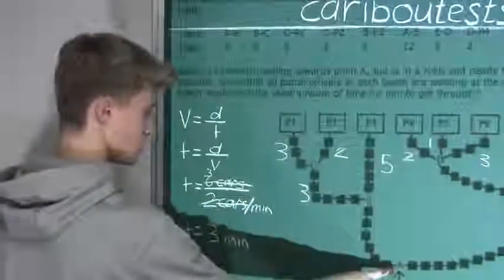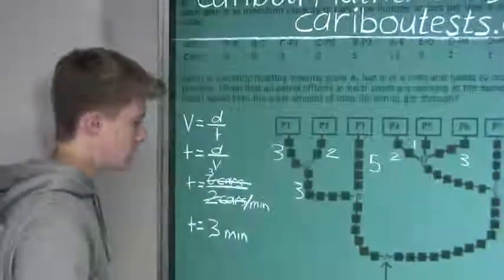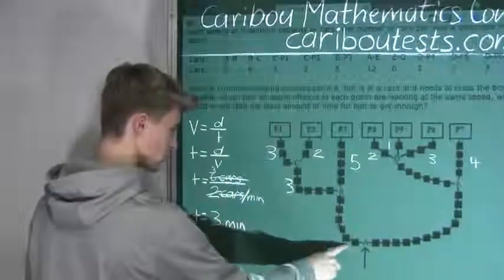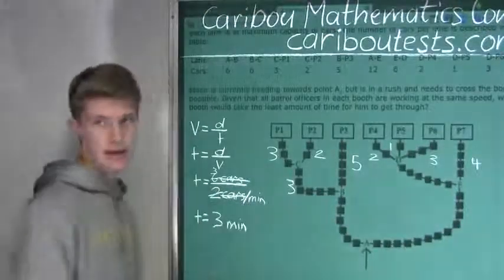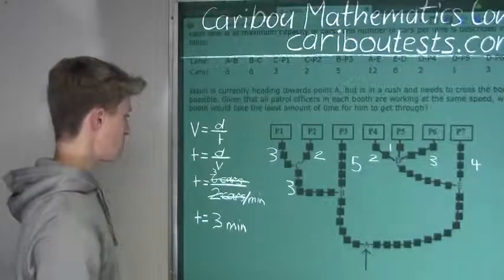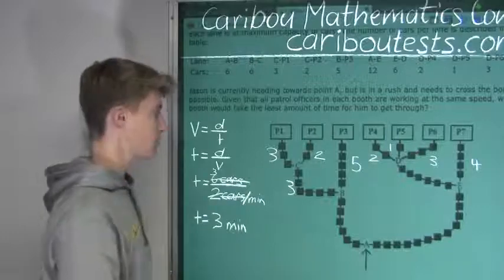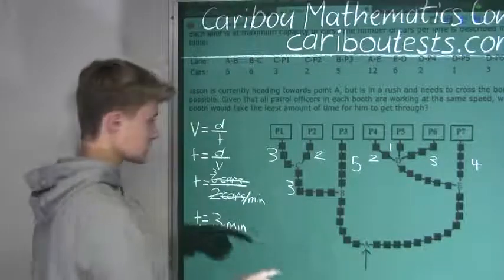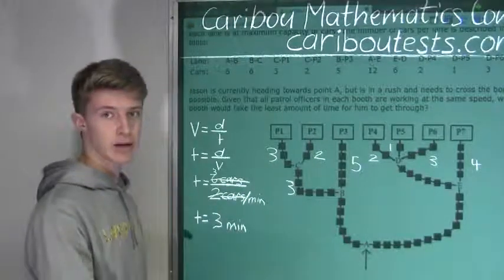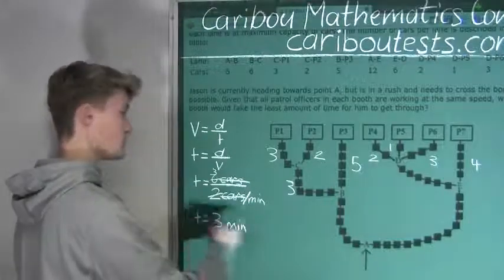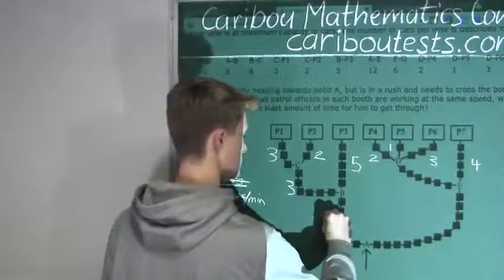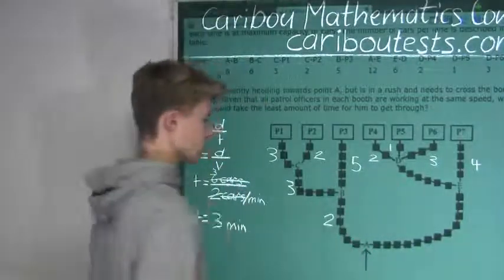And now let's do the line from A to B. So we know that the distance is one, two, three, four, five, six, again, six cars. And we know the velocity is, well, it goes into three booths, so it must be three cars per minute. So we have six cars divided by three cars per minute. Six divided by three is two, and then we just have two minutes.